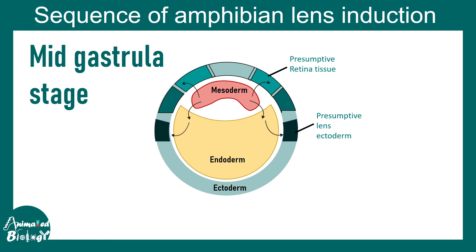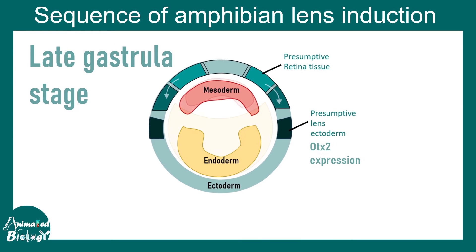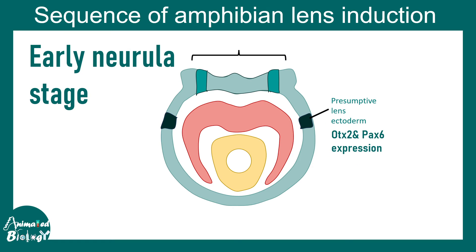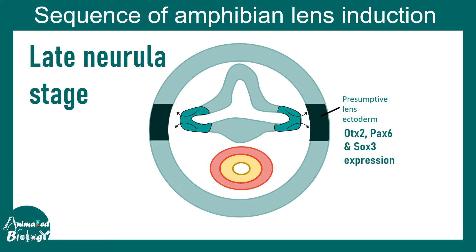Now let's talk about the sequence of amphibian lens development in more detail. It all starts in the mid-gastrula stage, where there is a presumptive lens ectoderm destined to become the lens. The mesoderm is shown in red, endoderm in yellow, and ectoderm in light green. In the late gastrula stage, specific competence factors begin appearing in the presumptive lens ectoderm. By the early neurula stage, OTX2 and PAX6 are highly expressed, defining the presumptive lens ectoderm.